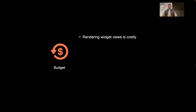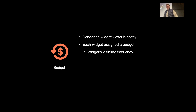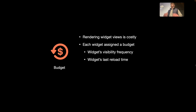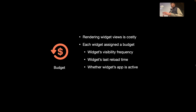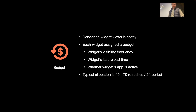Before we go forward, let's talk about this idea of a budget. Rendering a widget is actually very costly — it uses a lot of system resources and can drain your battery. So each widget is assigned a budget on how much it's allowed to be rendered. This budget is determined by how often it's visible, how often you're interacting with it, the widget's last reload time, and whether the widget's app is currently active. A typical allocation is around 40 to 70 refreshes in a 24-hour period, roughly every 15 to 30 minutes.